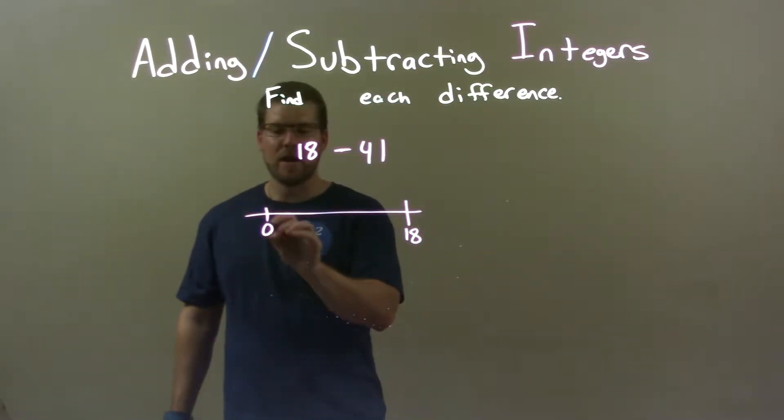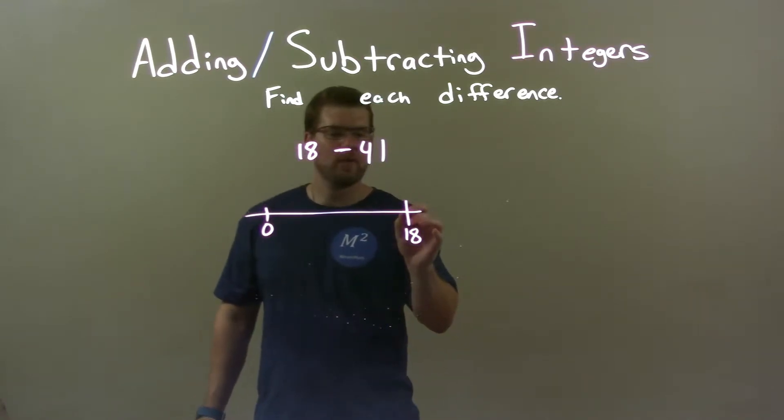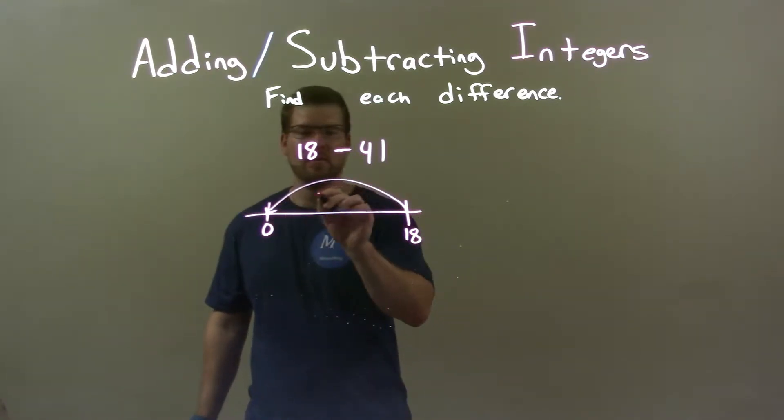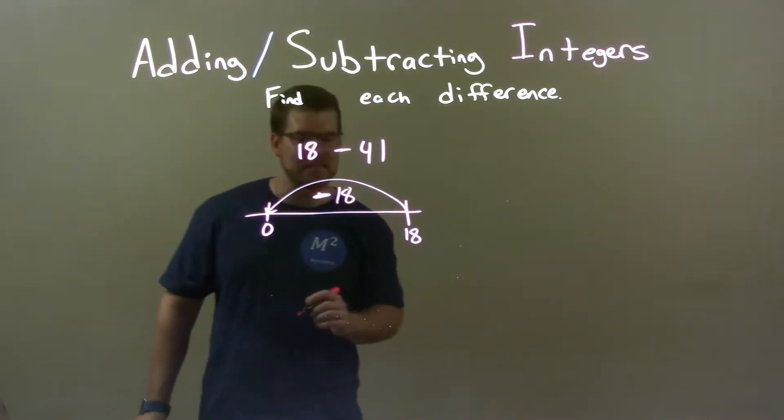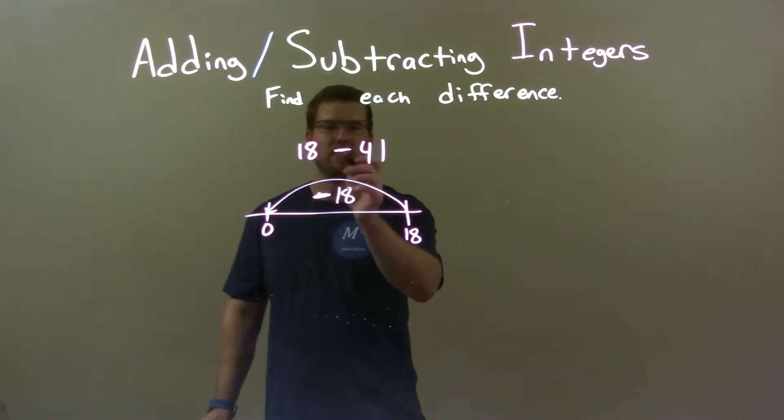And we're moving towards the negative direction. So I know if I go subtract 18 units, minus 18 right there, I get to 0. So, we normally move 41 units to the left because that's minus sign there.